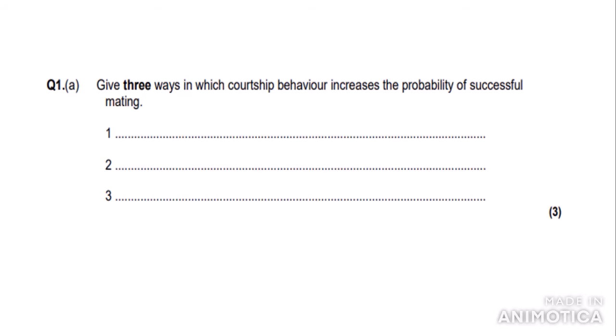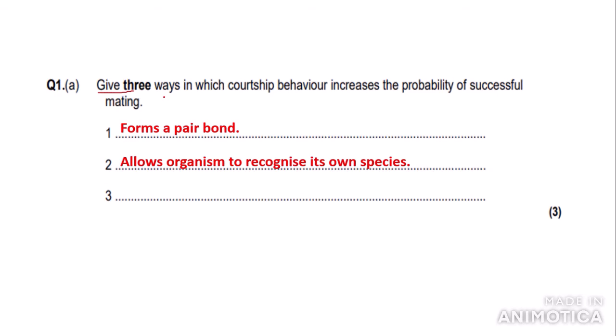Now let's look at the first exam question: 'Give three ways in which courtship behavior increases the probability of successful mating.' As the question says 'give,' you don't really need to explain your answers — just write the facts. So my three points are: it forms a pair bond which ensures successful upbringing of offspring; it allows an organism to recognize its own species through the courtship sequence; and the more similar different species' courtship sequences are, the more closely related they are.